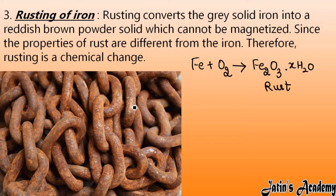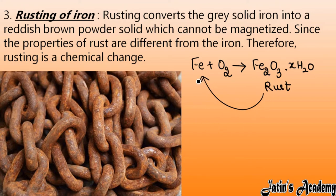This reddish-brown layer of rust will completely destroy the iron. The rust formed after reacting with oxygen has properties completely different from the original iron. Rust cannot be converted back into iron, so this is an irreversible change. Since properties also change, rusting of iron is a chemical change.